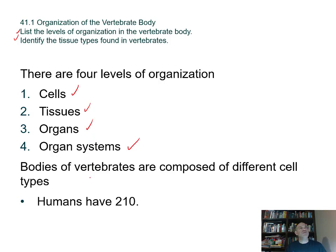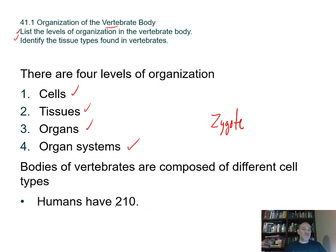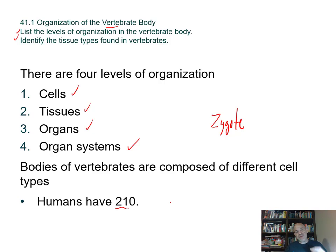Bodies of vertebrates are composed of different kinds of cells that go through differentiation. We all start off as a zygote, which has every gene in the animal genome. Humans, for example, have over 200 cell types, and they all have the same information. Different cell types arise through differentiation and development — cells get programmed to turn on a specific set of genes that regulate what the cell looks like and how it behaves.